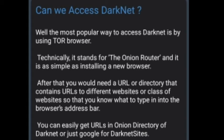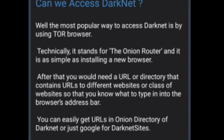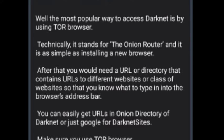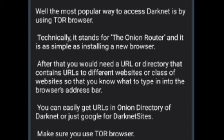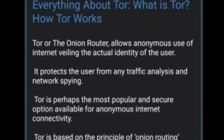The most popular way to access the darknet is by using the Tor browser, which technically stands for The Onion Router. It is as simple as installing a new browser. After that, you would need a URL or a directory that contains URLs to different websites so you know what to type in the browser's address bar. You can easily get URLs from an onion directory of darknet, or just Google for darknet sites — but make sure you use the Tor browser.